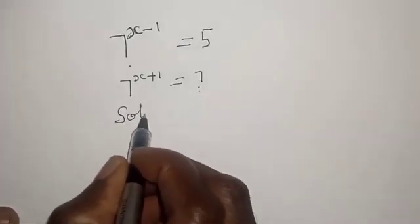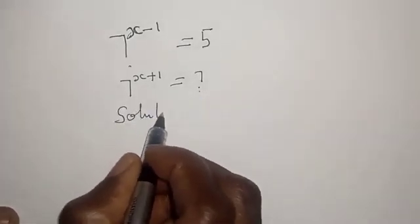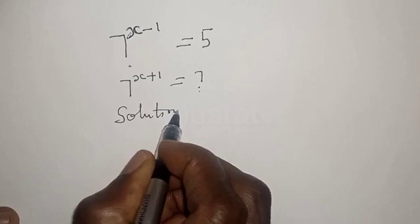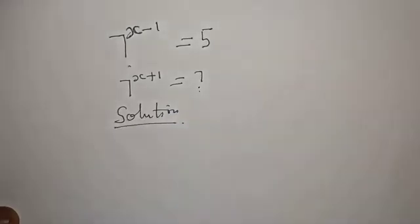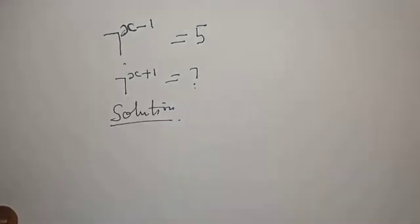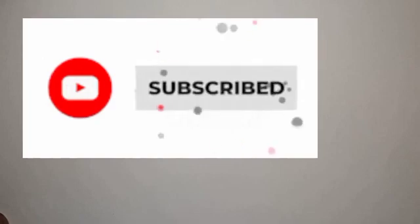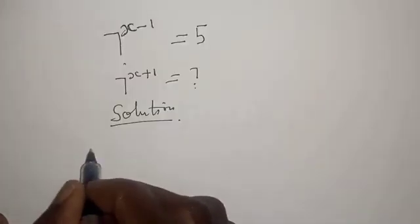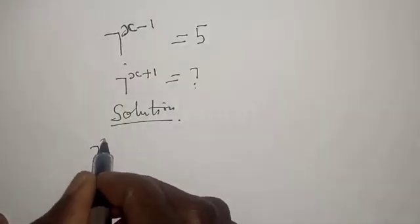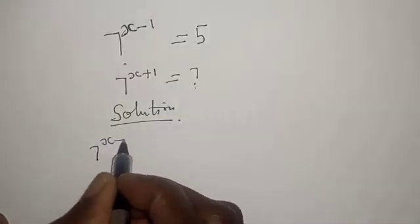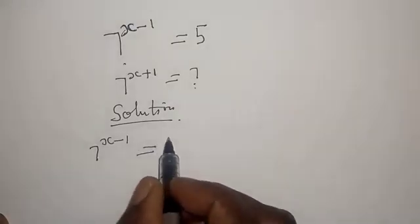Now, solution. We're going to use two methods to solve the equation. But before we proceed, please don't forget to like, share, comment, and subscribe. Then we have 7 raised to power x minus 1 is equal to 5.